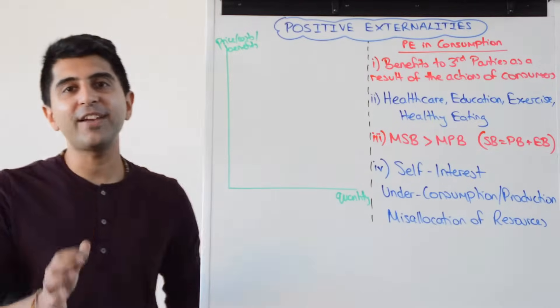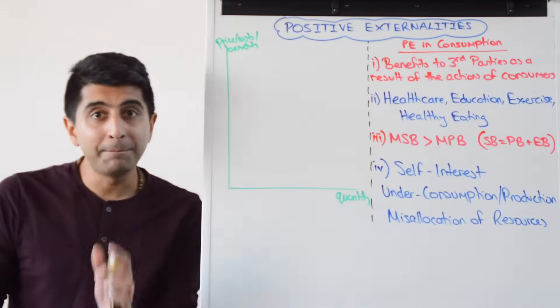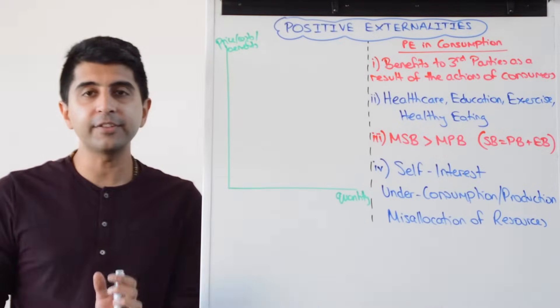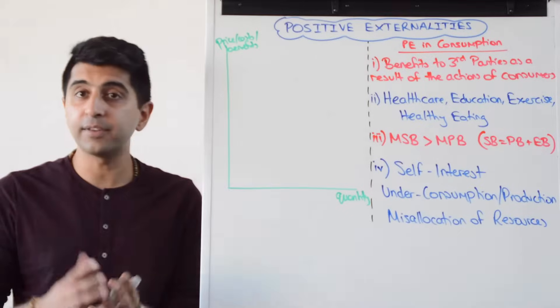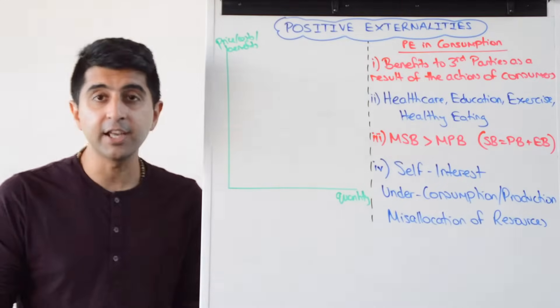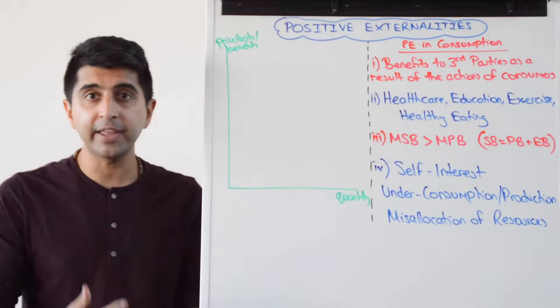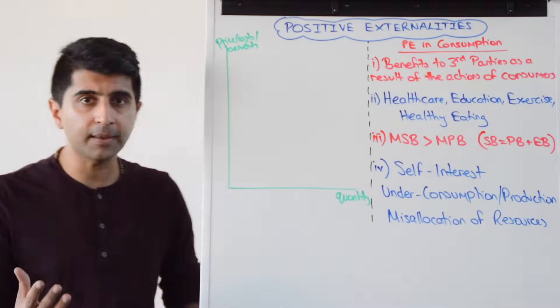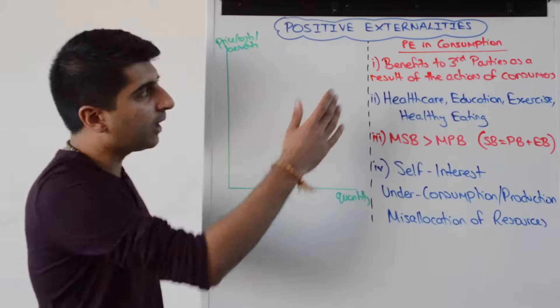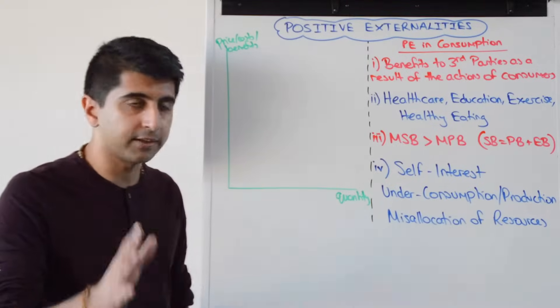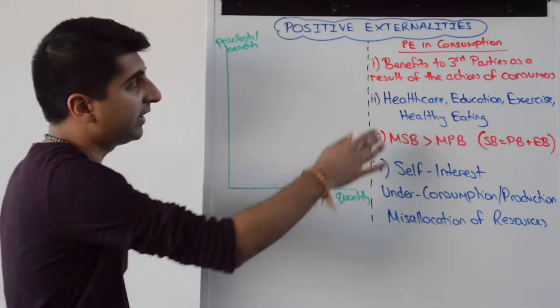Hi everybody! Positive externalities are benefits to third parties as a result of the actions of a separate agent. They can occur in production, they can occur in consumption. Let's start by looking at positive externalities in consumption.